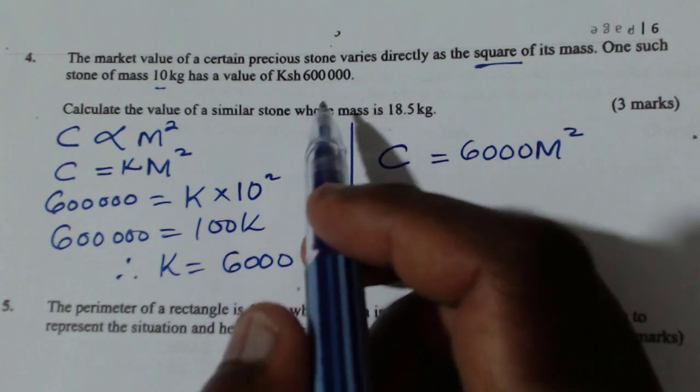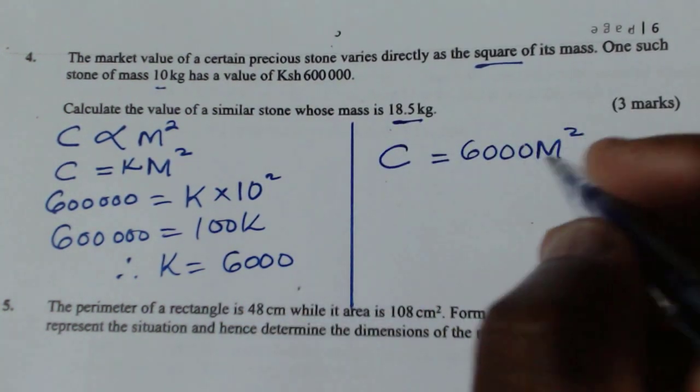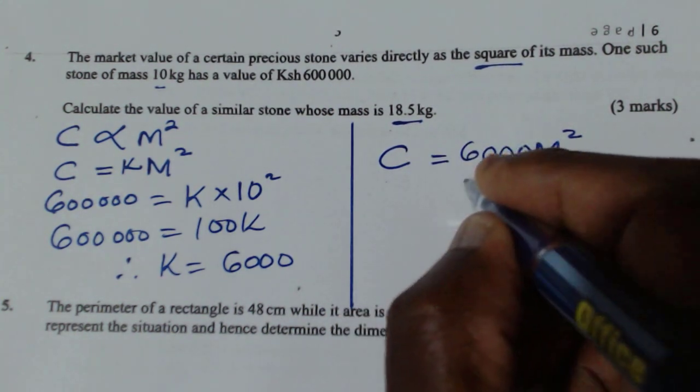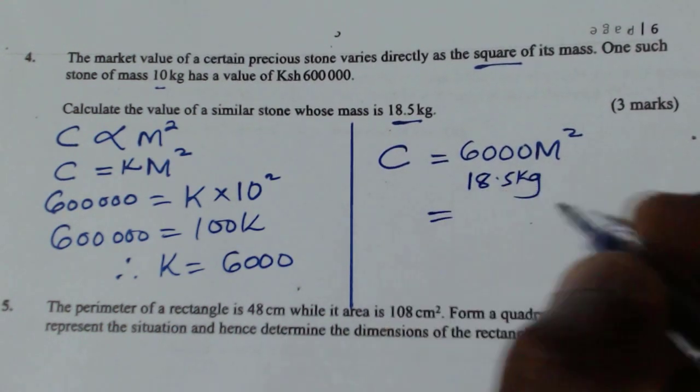Now the question is calculate the value of the similar stone whose mass is 18.5 kg. So what will be the cost when mass is 18.5 kg? So we just need to substitute.